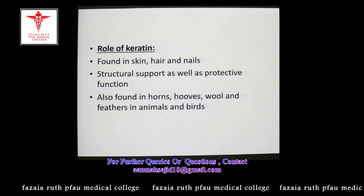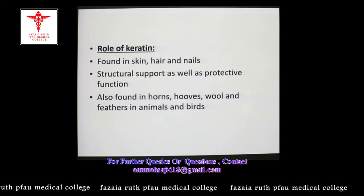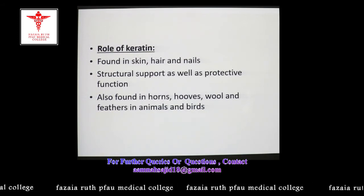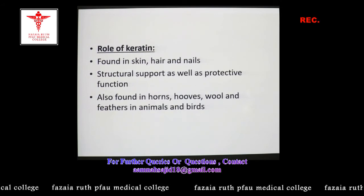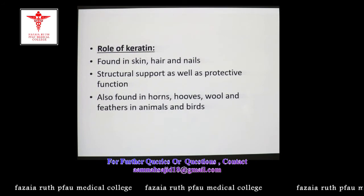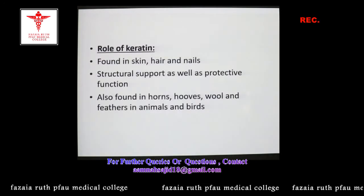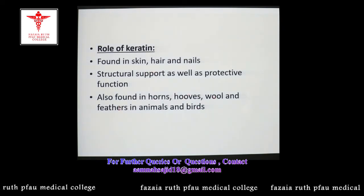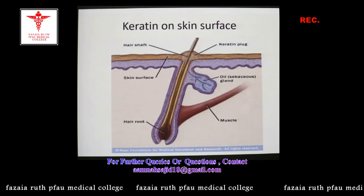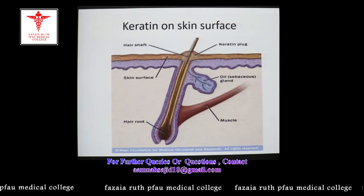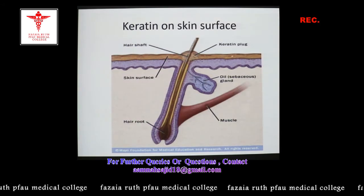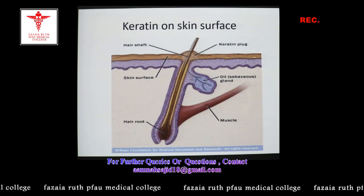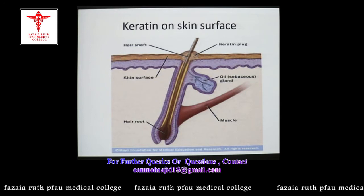Another fibrous protein is keratin, abundantly present in skin, hair, and nails, where it provides not only structural support but also performs a protective function. Keratin is also found in animals and birds in horns, hooves, wool, and feathers. This figure shows the structure of skin, with an outermost layer of keratin providing structural support and performing a protective function.